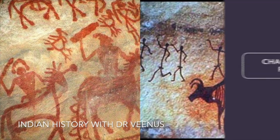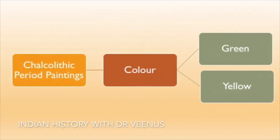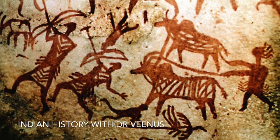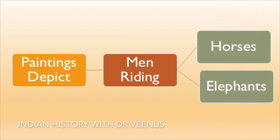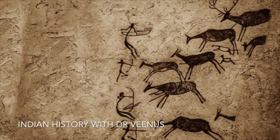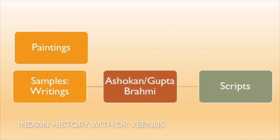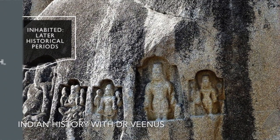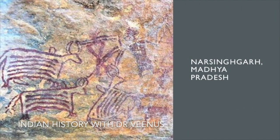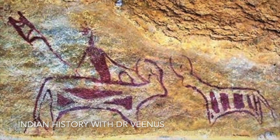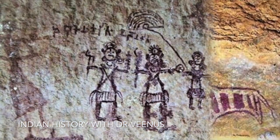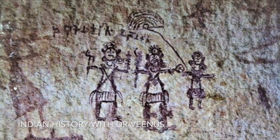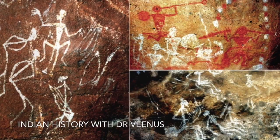The Chalcolithic Period saw an increase in paintings using green and yellow color. Most of the paintings depict battle scenes. There are many paintings of men riding horses and elephants, some carrying bow and arrow, which might indicate preparedness for skirmishes. Paintings and samples of writings in Ashokan and Gupta Brahmi scripts confirm that these cave sites were inhabited in late historical periods.